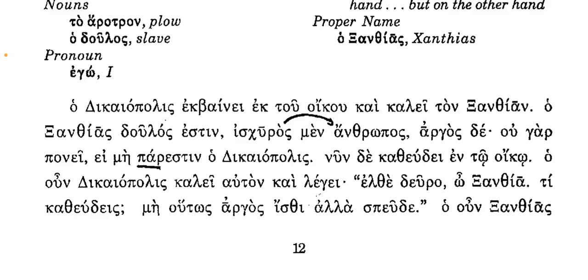Meaning on the one hand, he's a strong man. And then the next line is: but he's lazy. So 'de' is also a post-positive descriptor, meaning 'but he's lazy.' So: O Xanthias — Xanthias is a servant; on the one hand he's a strong man, but he's lazy.